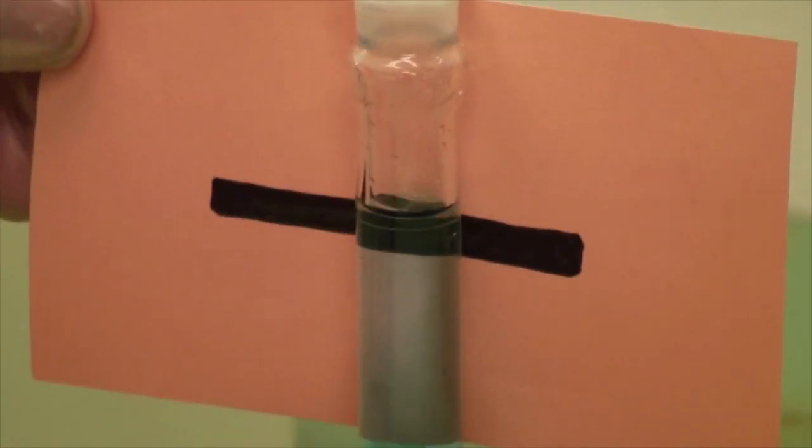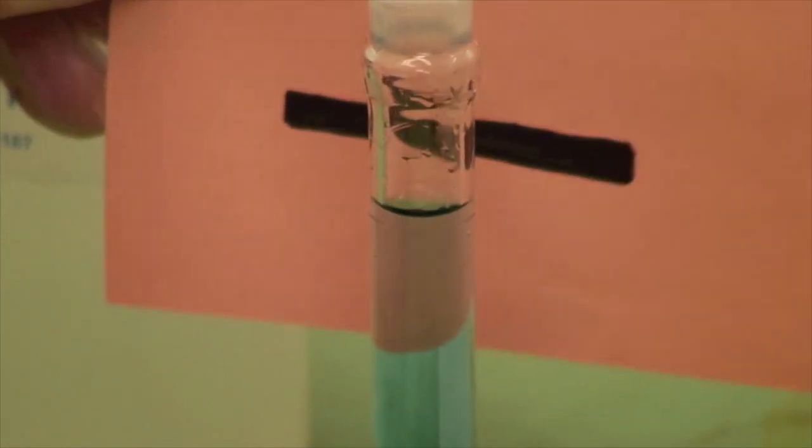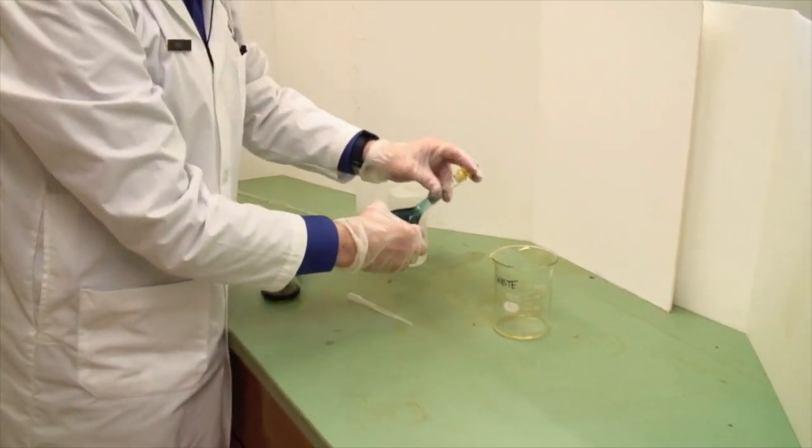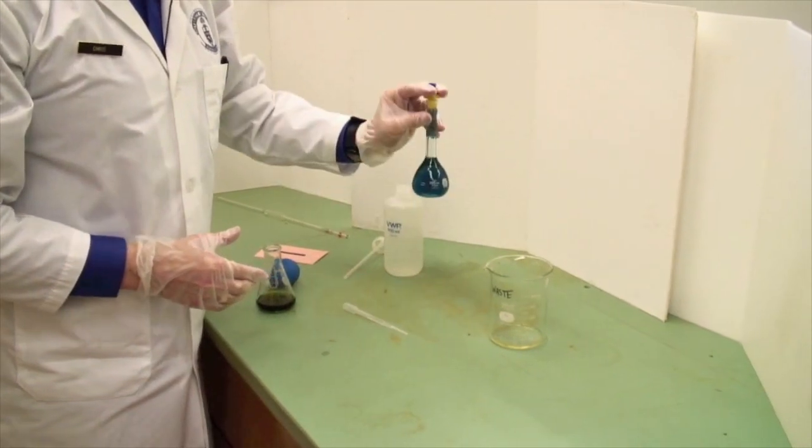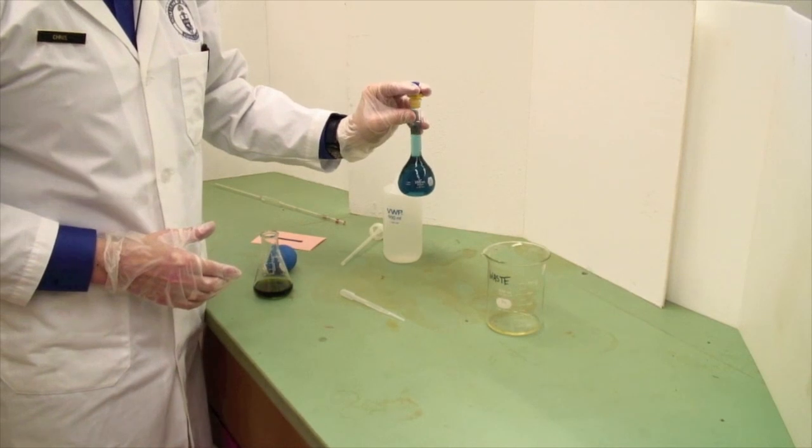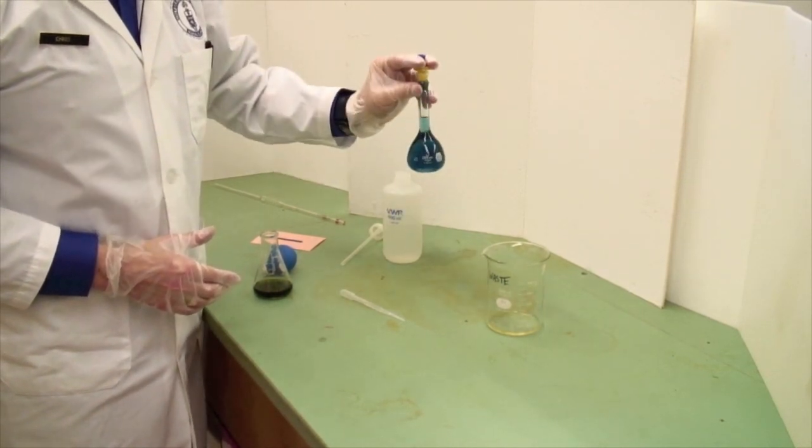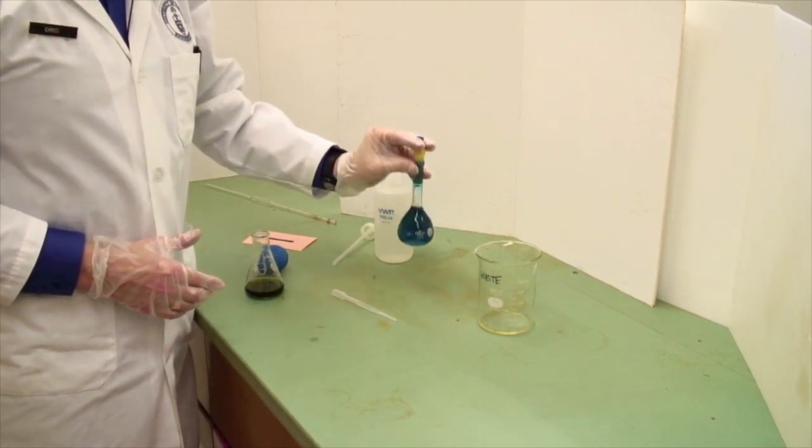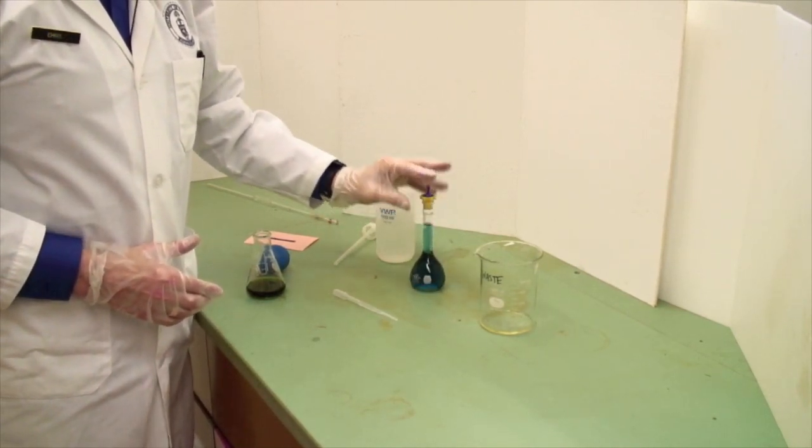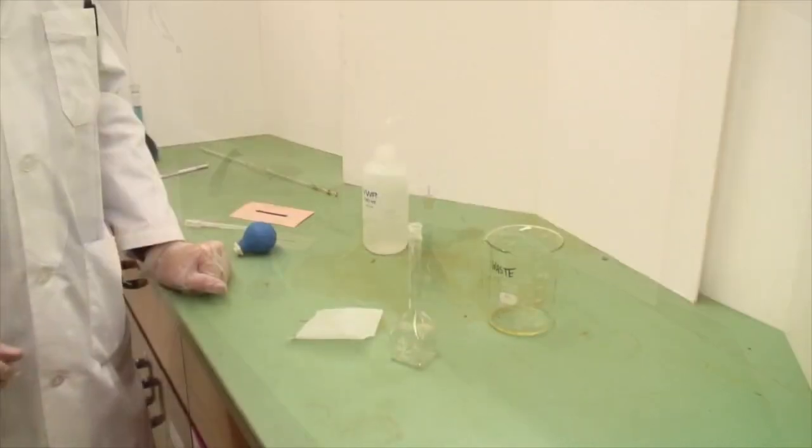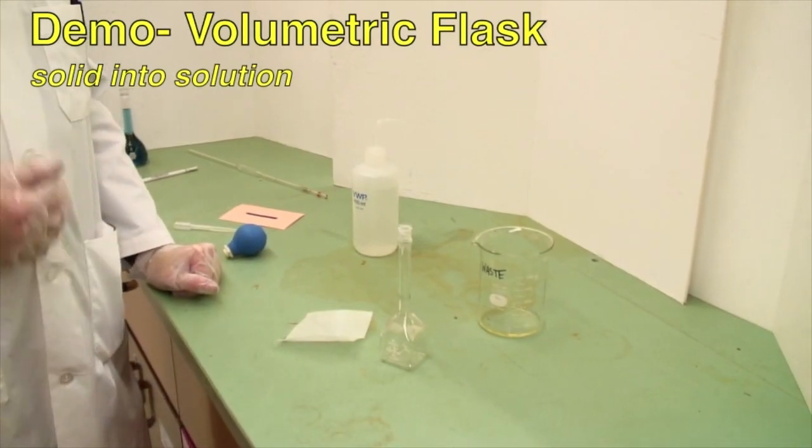The meniscus is tangential to the calibration line. Now that I've got it actually at the line, again, put the cap on, hold it with my hand, and invert several times to make sure that I've got a uniform solution. And this is now a 100.00 ml solution of 10 mls of my initial liquid. The second way of using a volumetric flask is to dissolve a known amount of solid.